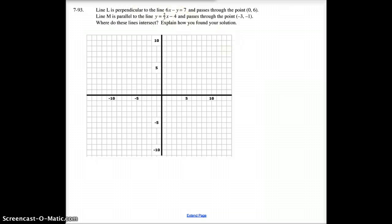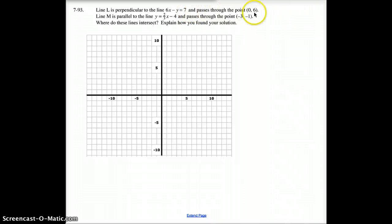Question 93. Line L, and you're going to graph these, line L is perpendicular to the line 6X minus Y equals 7, and passes through the point (0, 6). So, again, get this into slope-intercept form. And you know perpendicular would be the opposite reciprocal, so find out what your slope is, apply your X and Y points appropriately, and graph that.